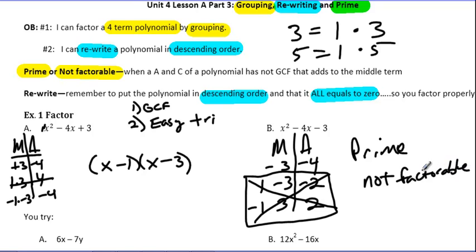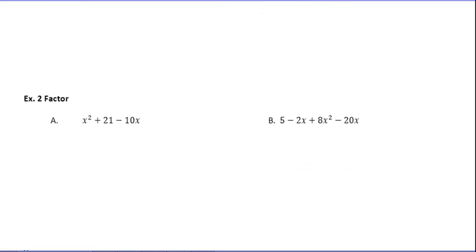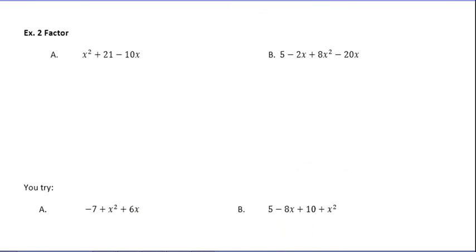So this is an example of a polynomial that is prime. So we would say prime, or we would say not factorable. Remember, prime and not factorable is not the same as no solution. It just means you can't factor it. You've got a couple U tries for you to do in class tomorrow. Let's move on to our second example for today.